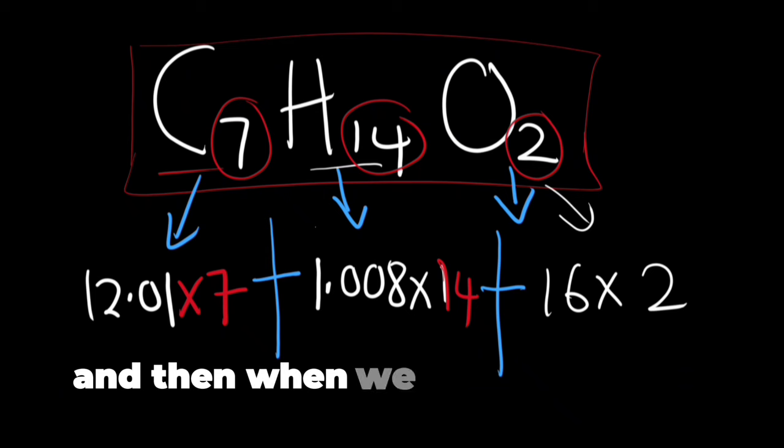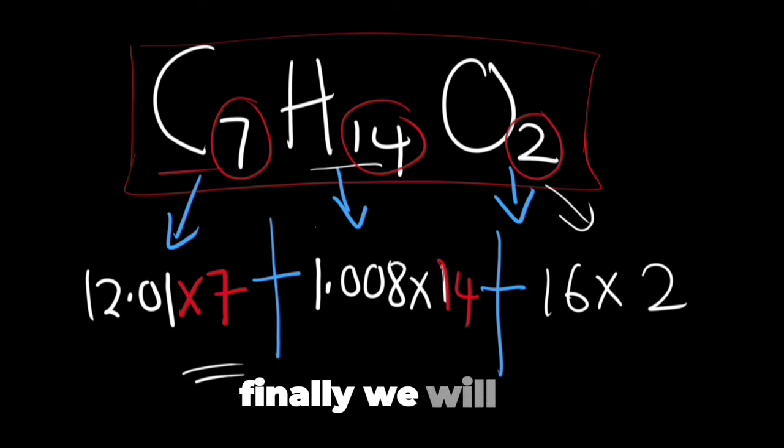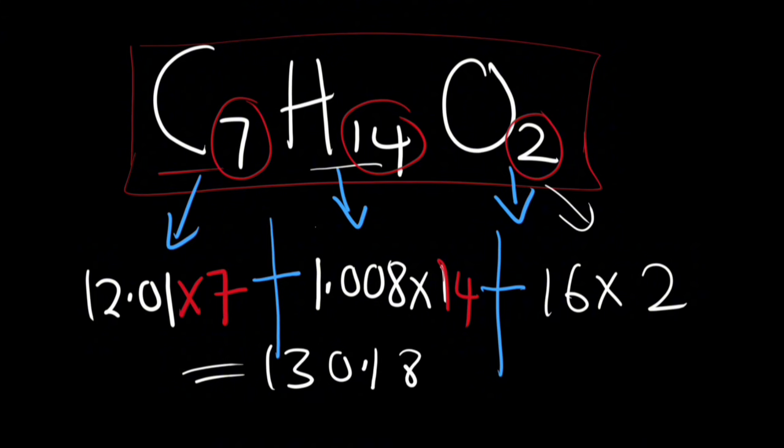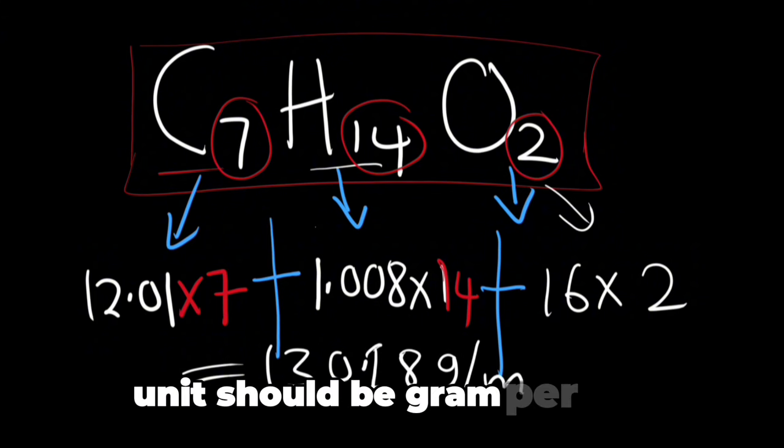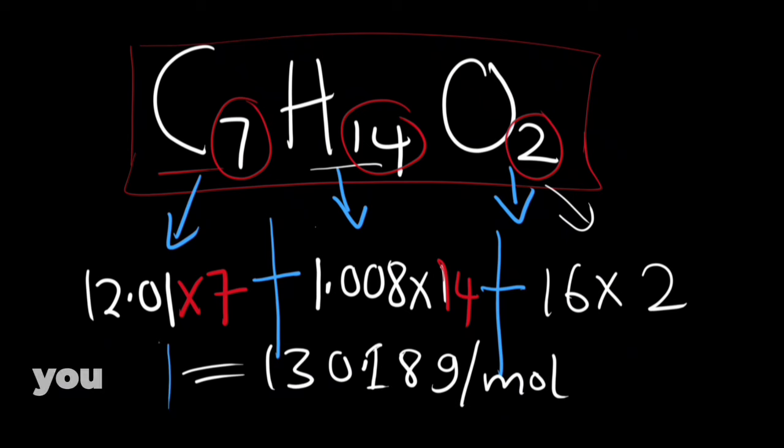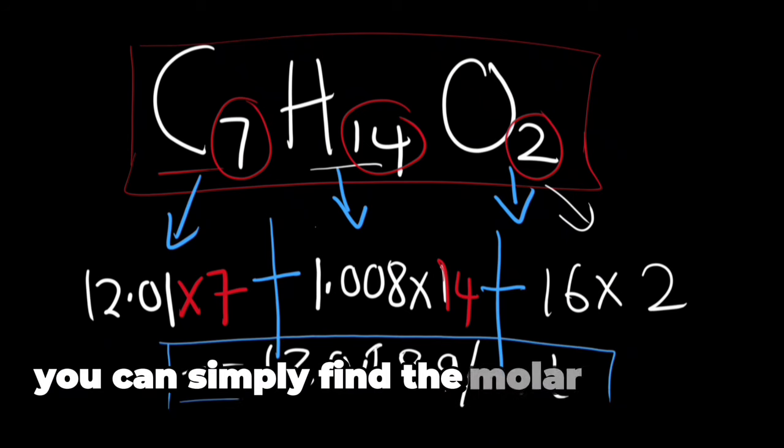And then when we calculate this all together finally we will get 130.18 and because this is molar mass the unit should be gram per mole. And that is how you can calculate the molar mass of a compound.